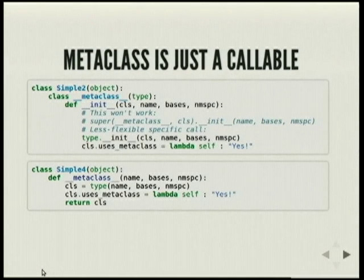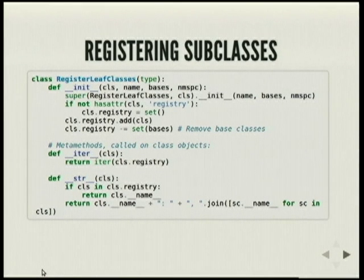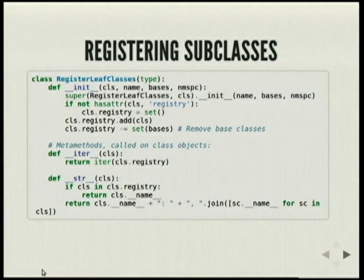So because a metaclass is just a callable, you can define it as a class or as a function. This is an example of using a metaclass: when it's initializing the class, it checks if the class has an attribute registry. If it doesn't, it adds the class to the class's registry. And when str() of that class is called, it returns the class name followed by all the subclasses in its registry.